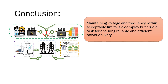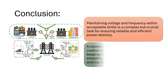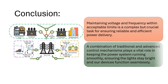Conclusion: maintaining voltage and frequency within acceptable limits is a complex but crucial task for ensuring reliable and efficient power delivery. A combination of traditional and advanced control mechanisms plays a vital role in keeping the power system running smoothly, ensuring the lights stay bright and our devices function seamlessly.